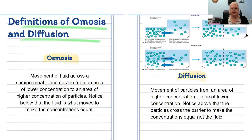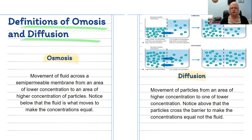Let's go over some key definitions. Osmosis is the movement of fluid across a semipermeable membrane from an area of lower concentration to an area of higher concentration — the fluid moves to make the concentrations equal. Diffusion is the movement of particles from an area of higher concentration to one of lower concentration. Here the fluid is the same in both compartments; it is the solute that moves to equalize the concentration.